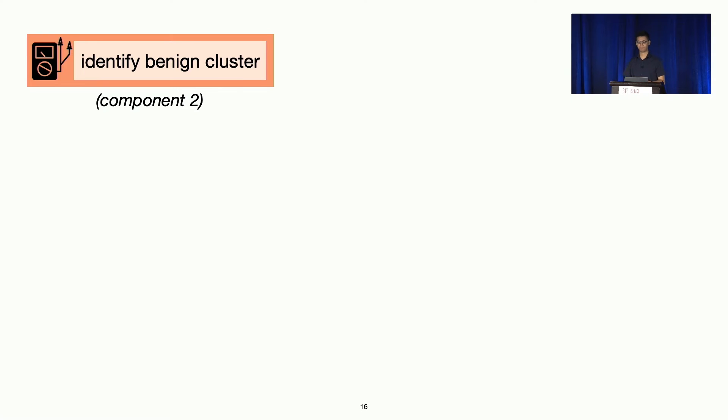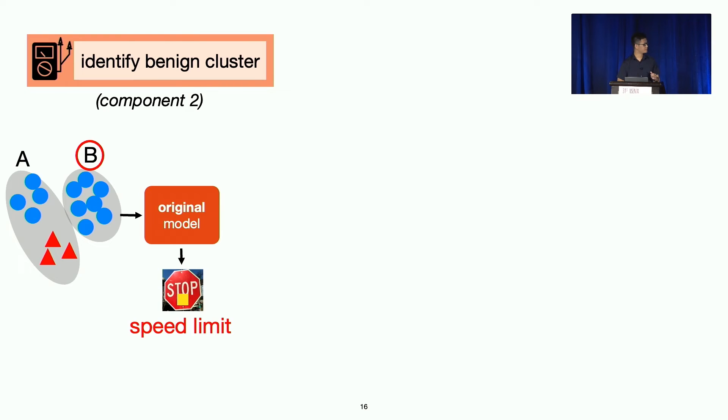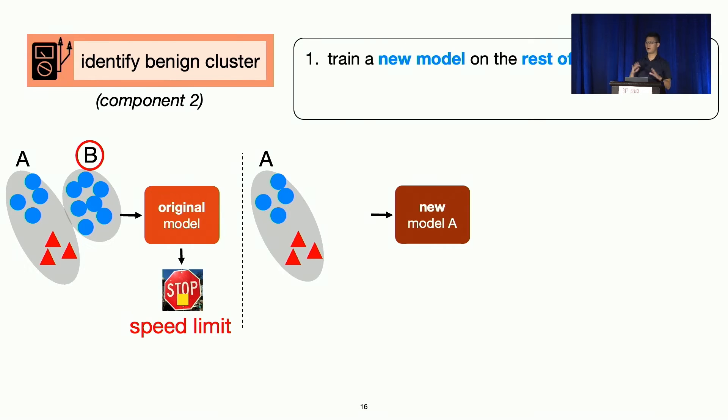For example, we want to understand how does cluster B here impact the misclassification? Does it cause it? So we're going to do this counterfactually. It means we're going to remove cluster B completely out of the equation. We're going to remove it from the training dataset and train a new model from scratch on the rest of the data except cluster B.